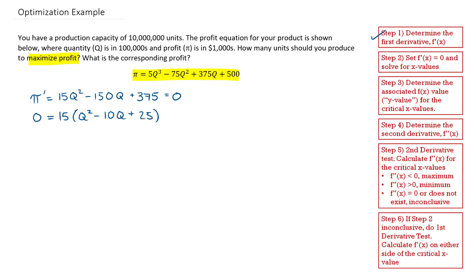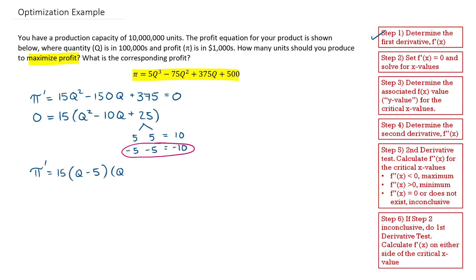All of this is equal to 0, and now I'm going to see if I can factor further. I need to find factors of 25 that add up to negative 10. Negative 5 times negative 5 indeed adds up to negative 10, so I'll use those values. This gives me 15 times (q minus 5) times (q minus 5) equals 0, which is 15 times (q minus 5) squared equals 0. Therefore, q equals 5 is the critical q value. Step 2 is done.